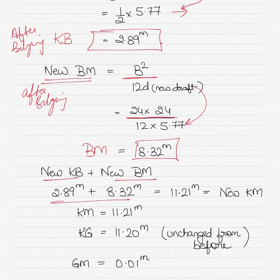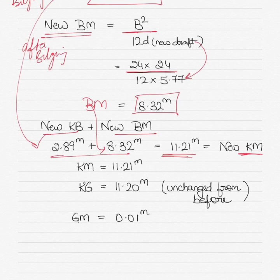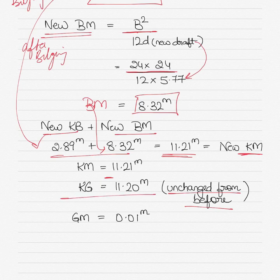New KB plus new BM gives new KM: 2.89 plus 8.32 equals 11.21 meters, which is the new KM. Now KM is 11.21 and KG remained unchanged as 11.20 meters — calculated earlier. So KM minus KG gives us the new GM of the vessel.